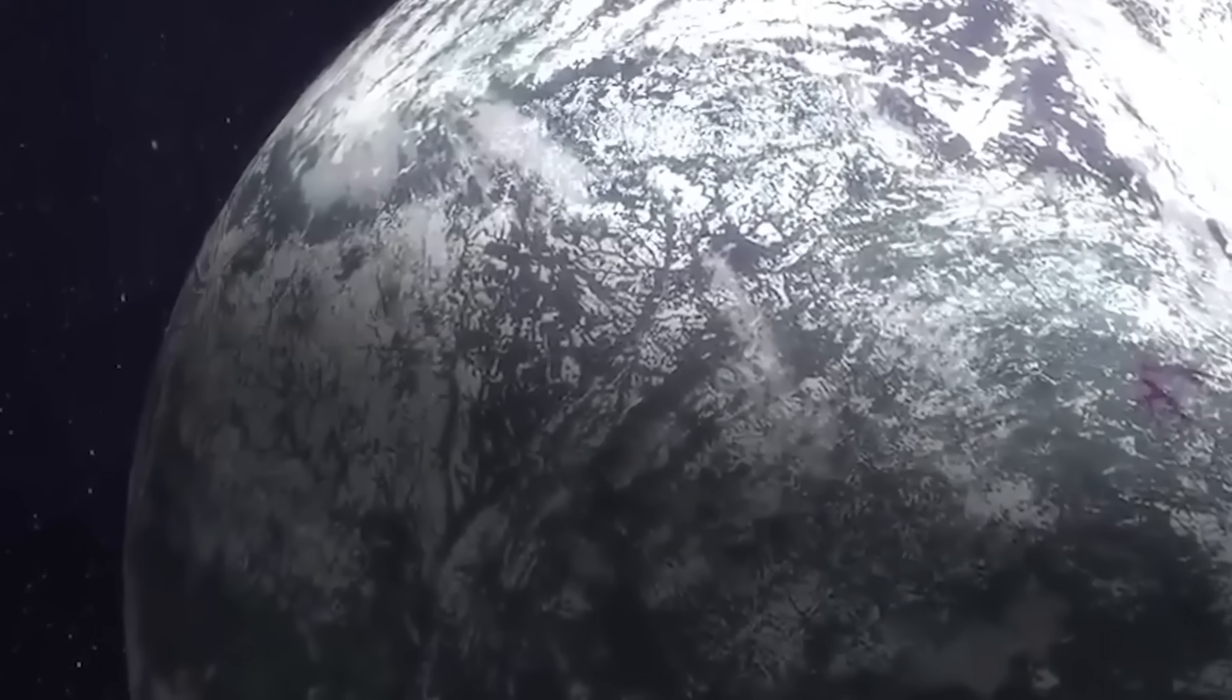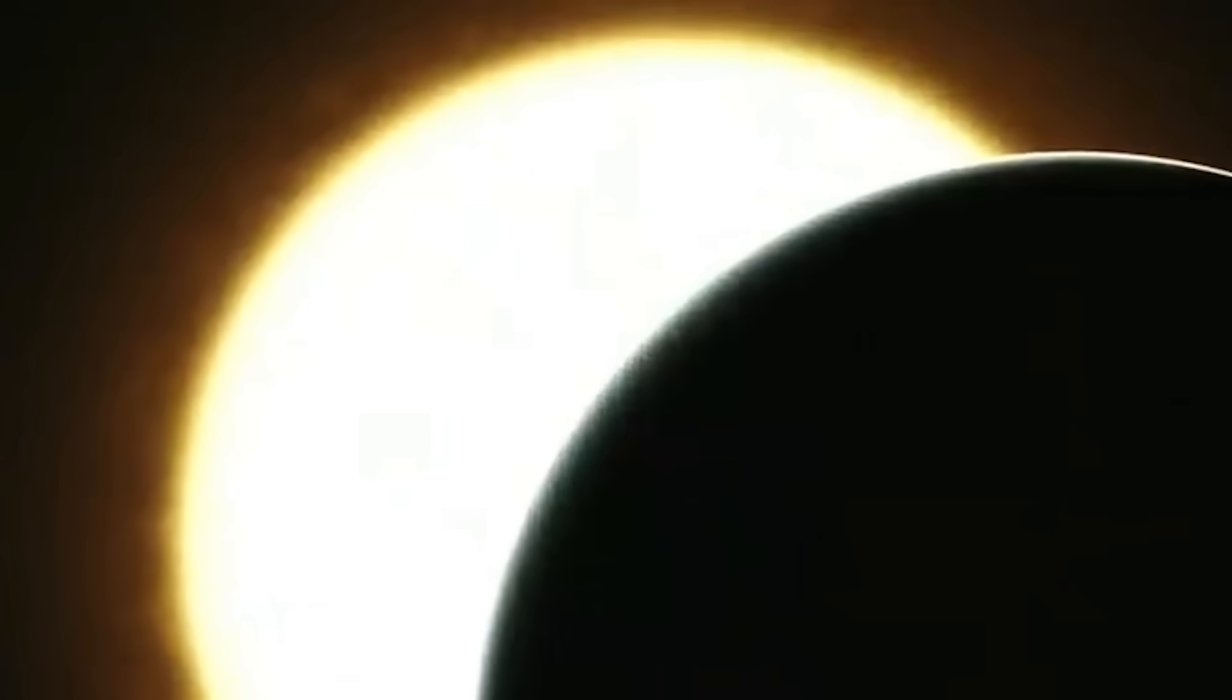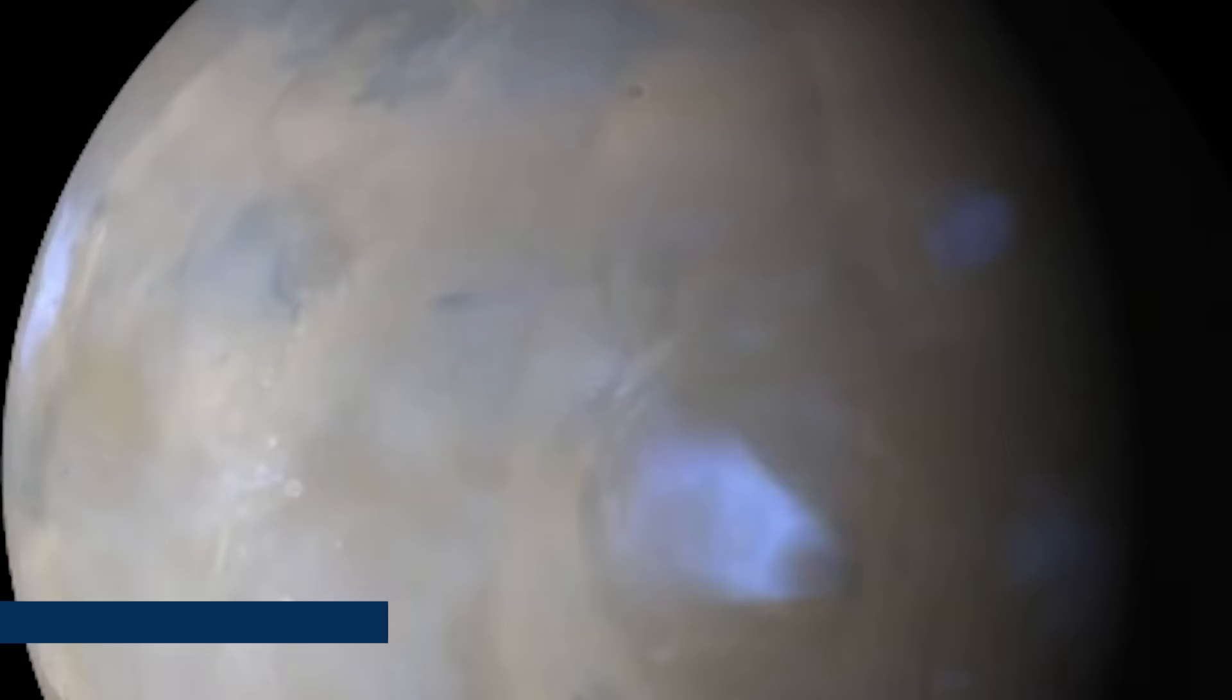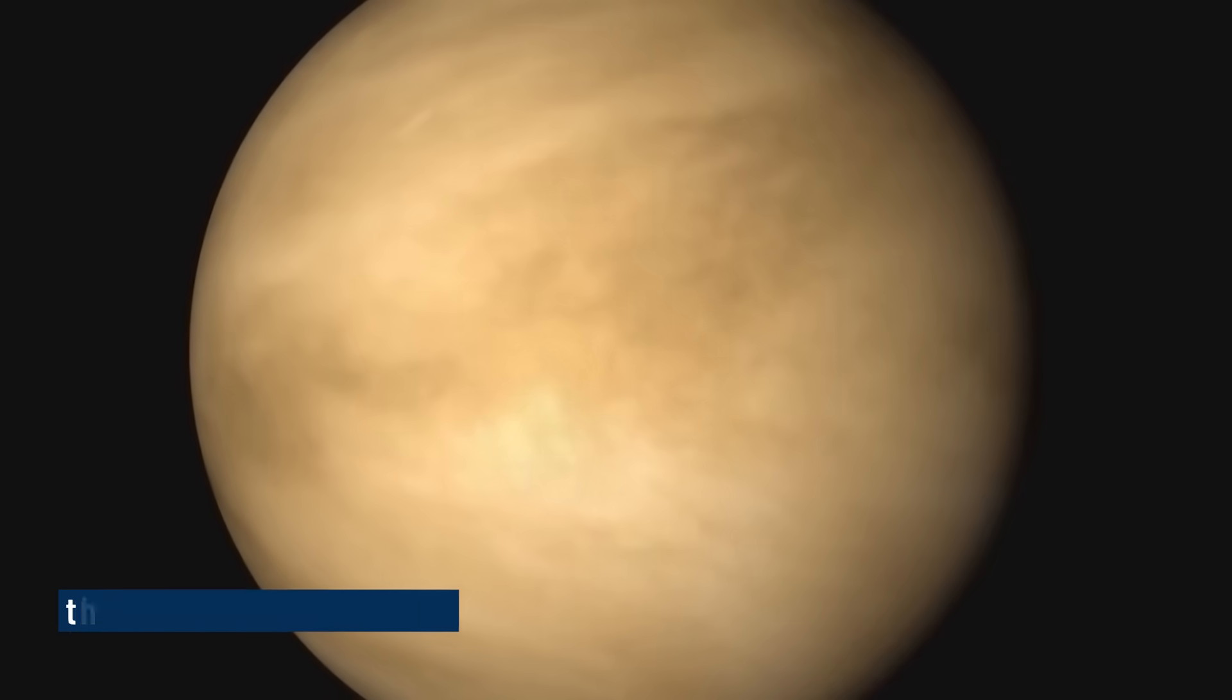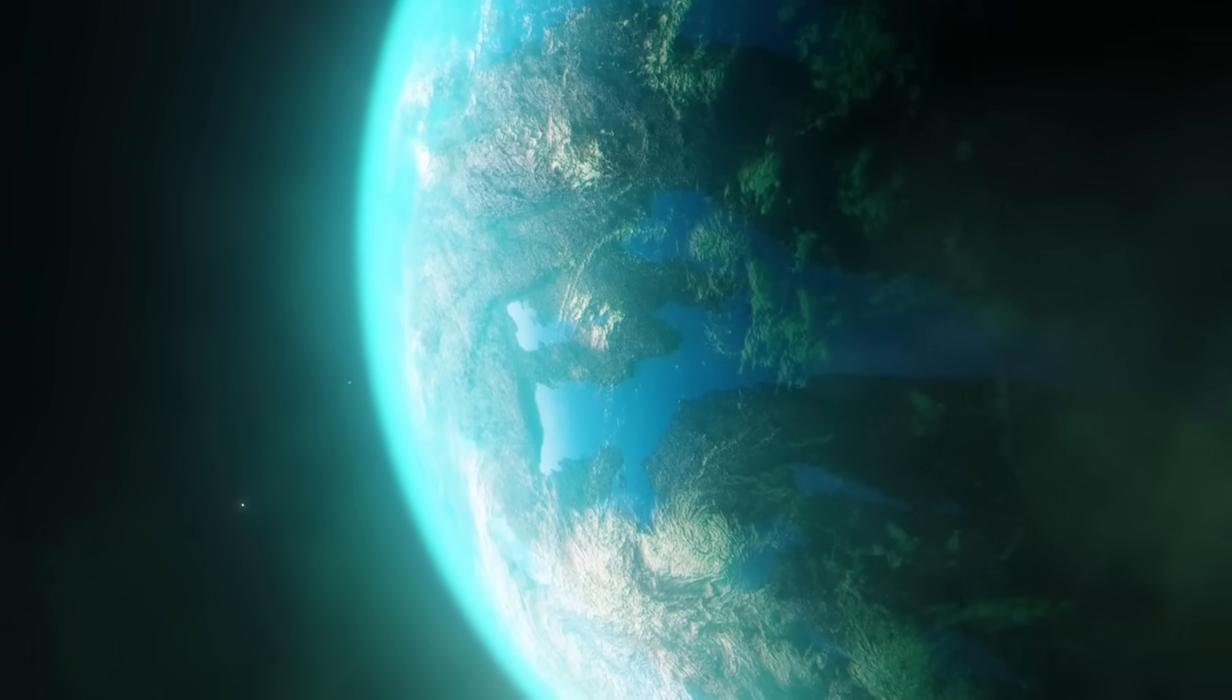We could make out signs of temperature differences. One side likely always in daylight, the other in darkness. We could even tell that the planet isn't covered in thick clouds like Venus. Instead, it has a surface that reflects light in a way that suggests it's rocky, like Earth.